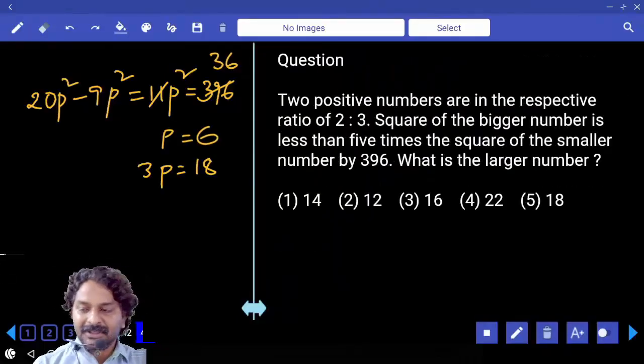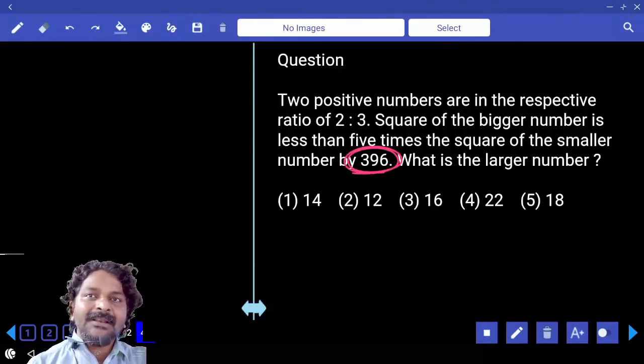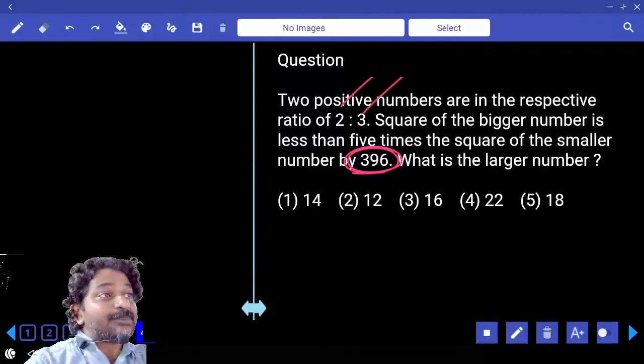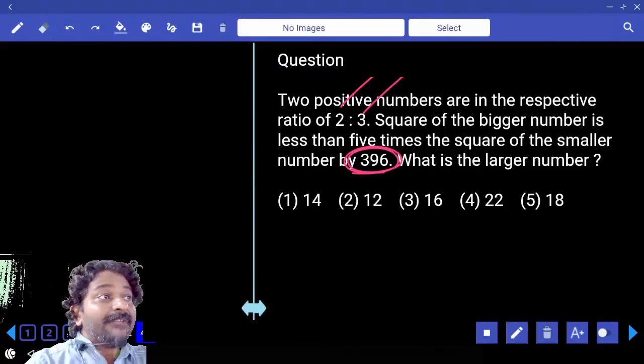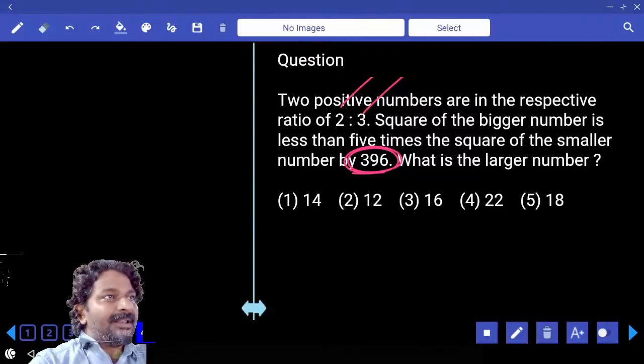Actually, when you look at this number, this is a 9 multiple. Are these numbers 3 multiples, both? If they are both 3 multiples, when you take squares, it becomes a 9 multiple. Am I right?